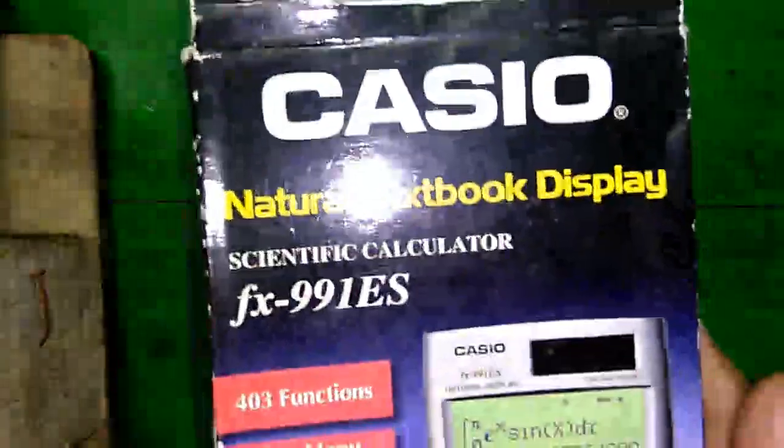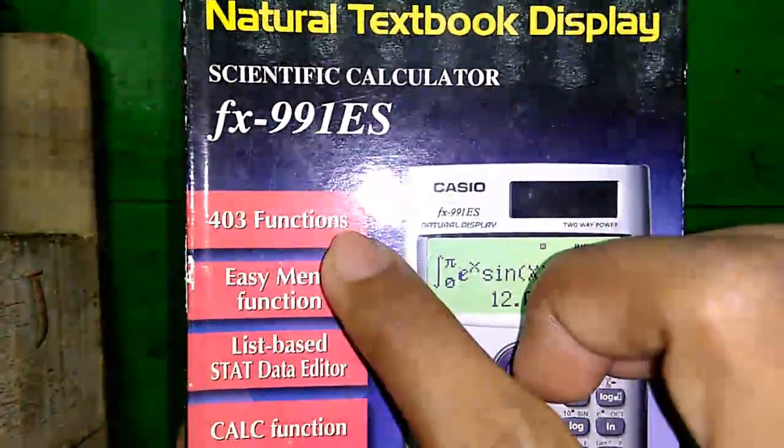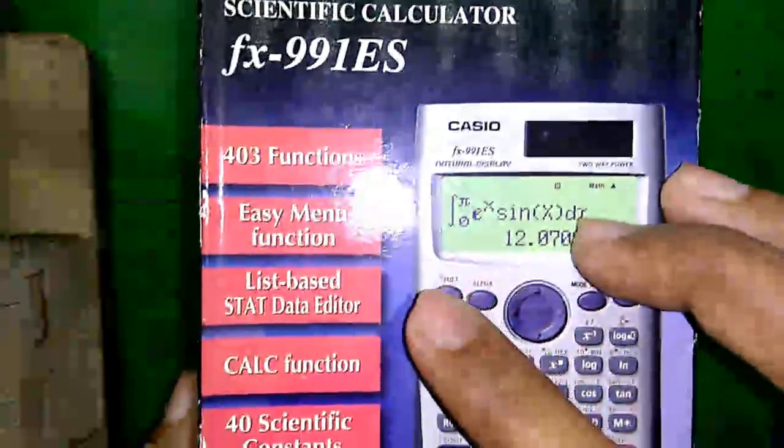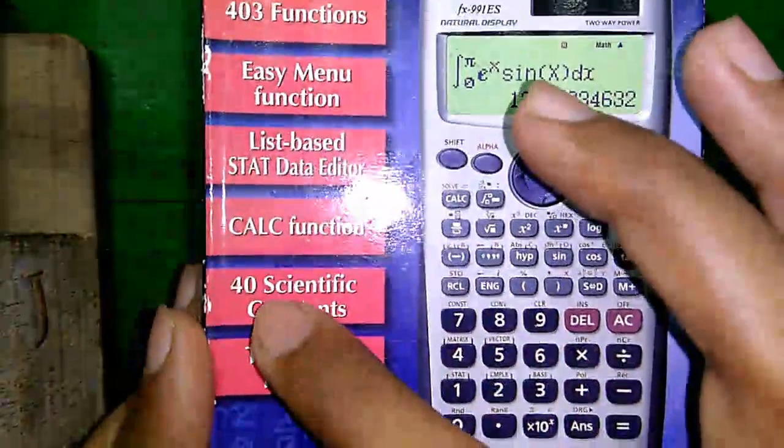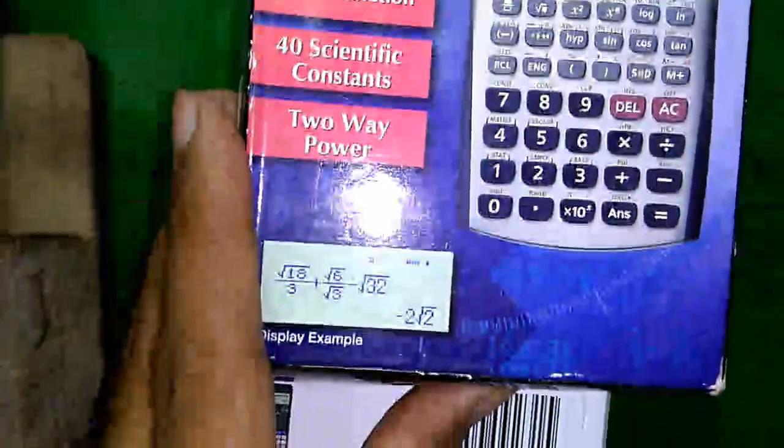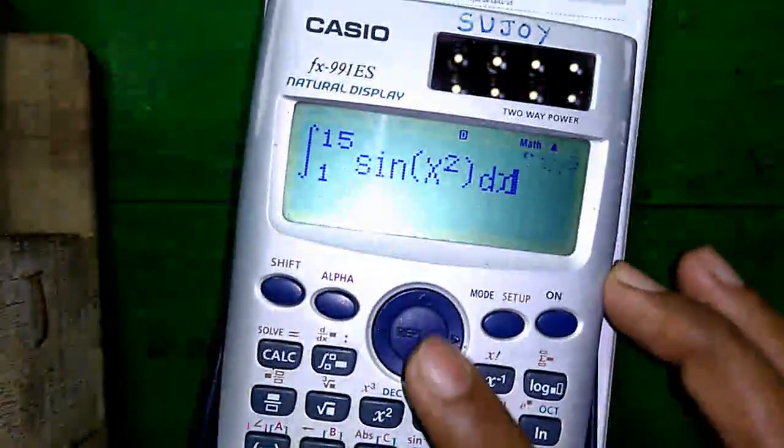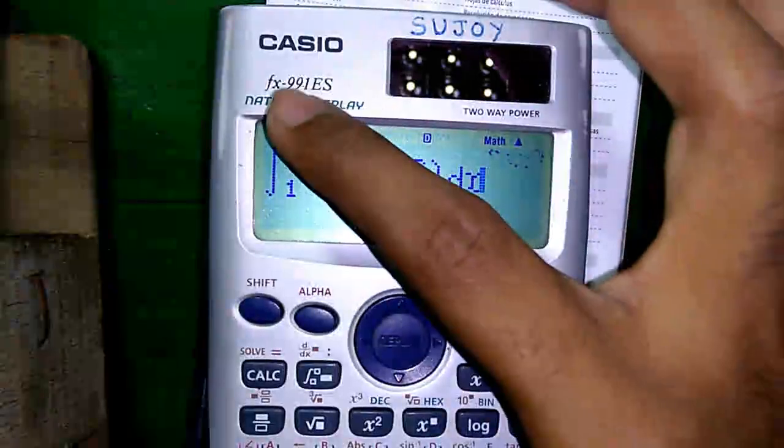The older calculator which is Casio FX-991ES scientific calculator had 403 functions, easy menu function, list-based data editor, calc function, 40 scientific constants, and 2-way power. And here is the older calculator. I have made many videos, around 56 videos, on this older calculator.